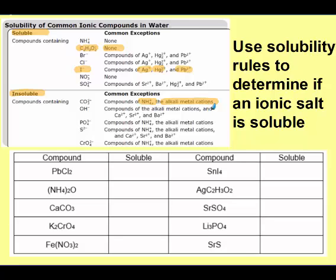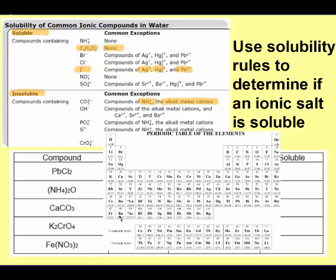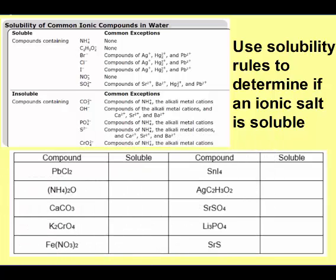Alkali metals are your group 1A. Group 1A salts — a salt being an ionic compound with a metal and non-metal — will dissolve. Let's look at a couple of examples. The first one is lead(II) chloride. We look at the negative ion, chloride, and find it on the chart. Chloride should be soluble unless it's paired with silver, mercury, or lead. Lead is one of the exceptions, so this will be not soluble.